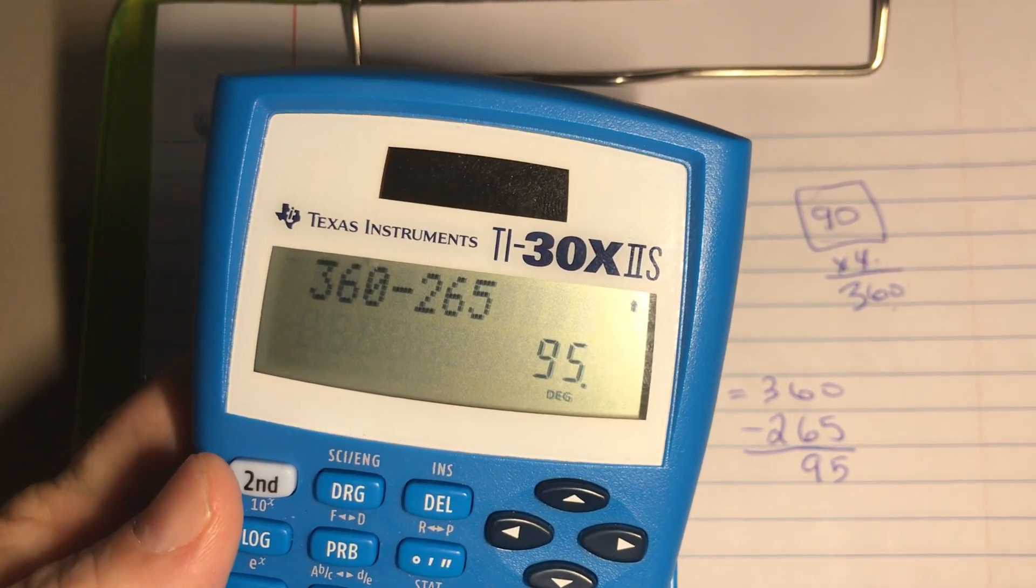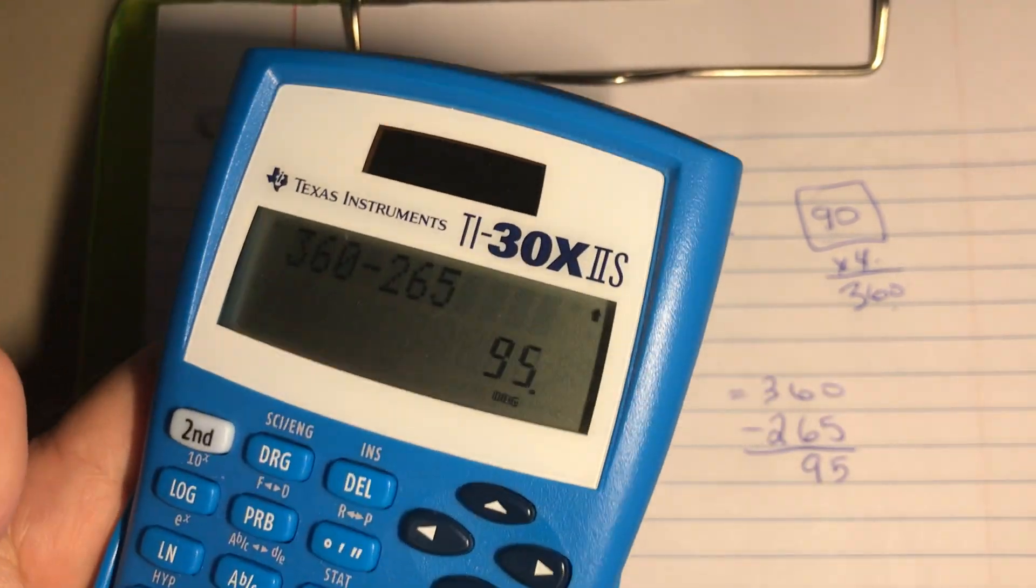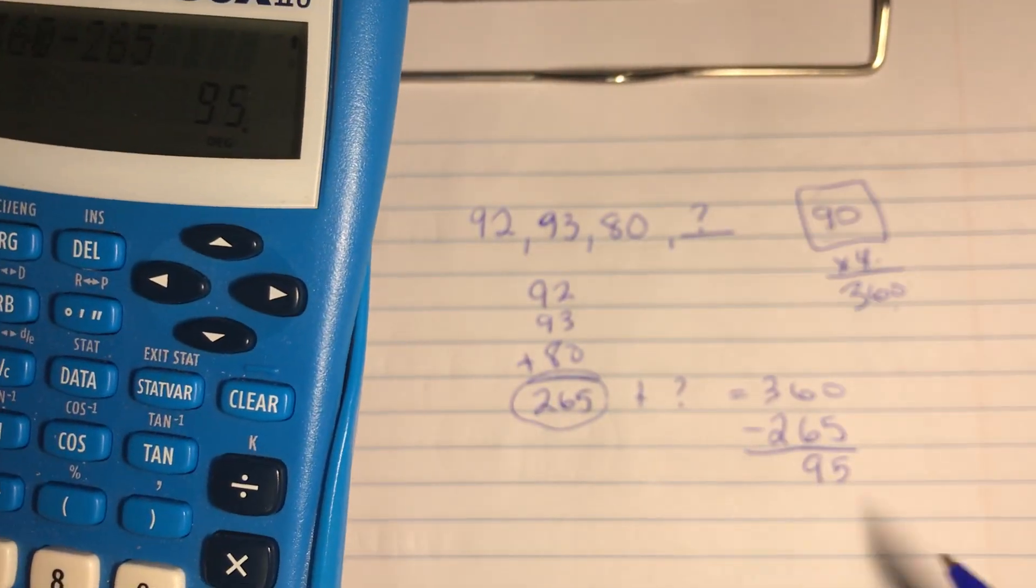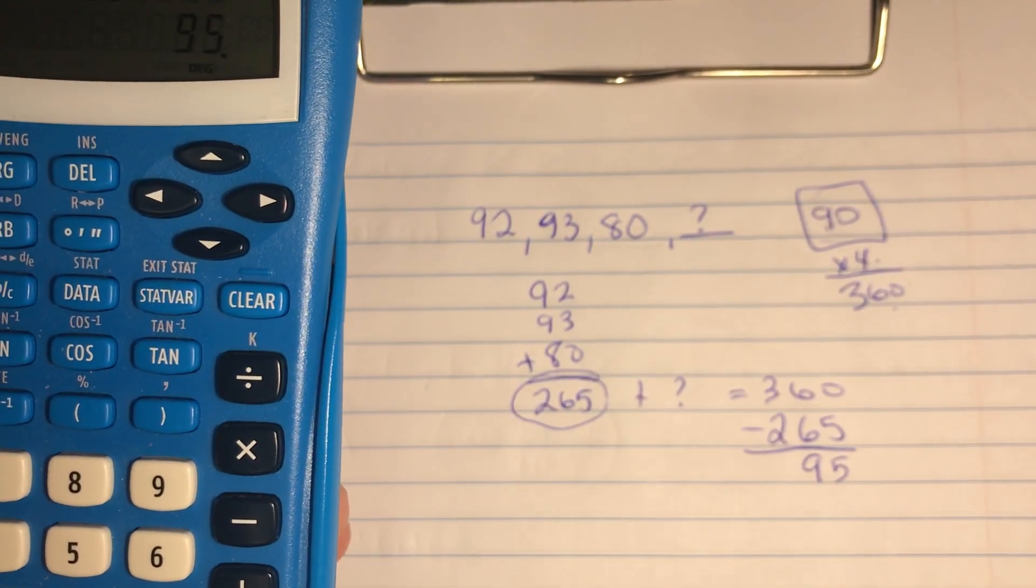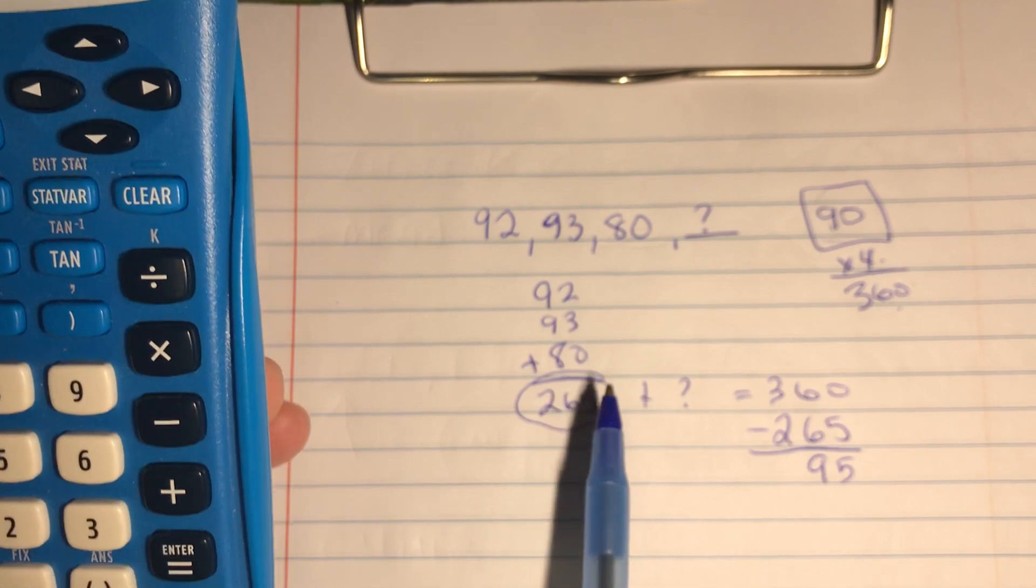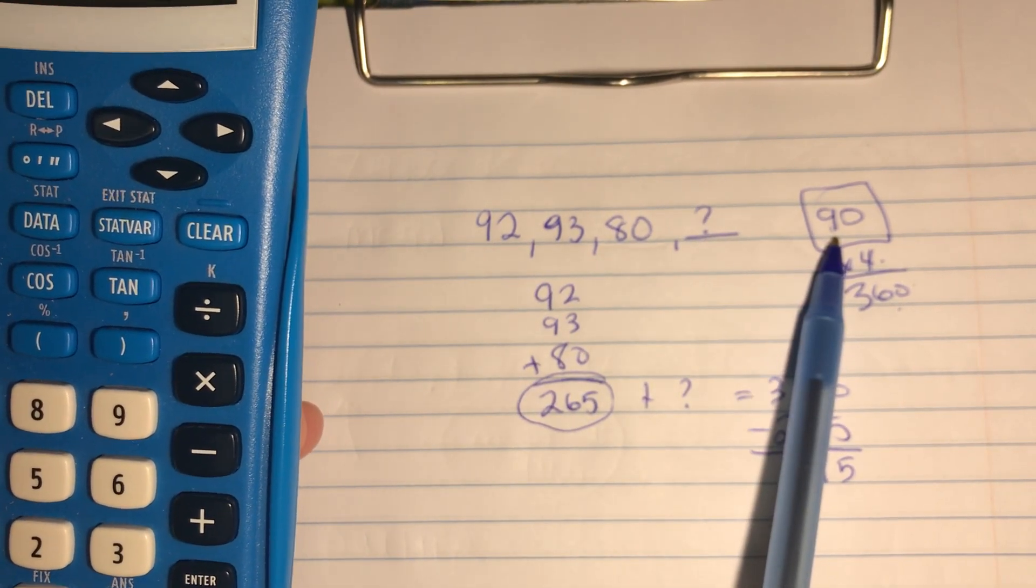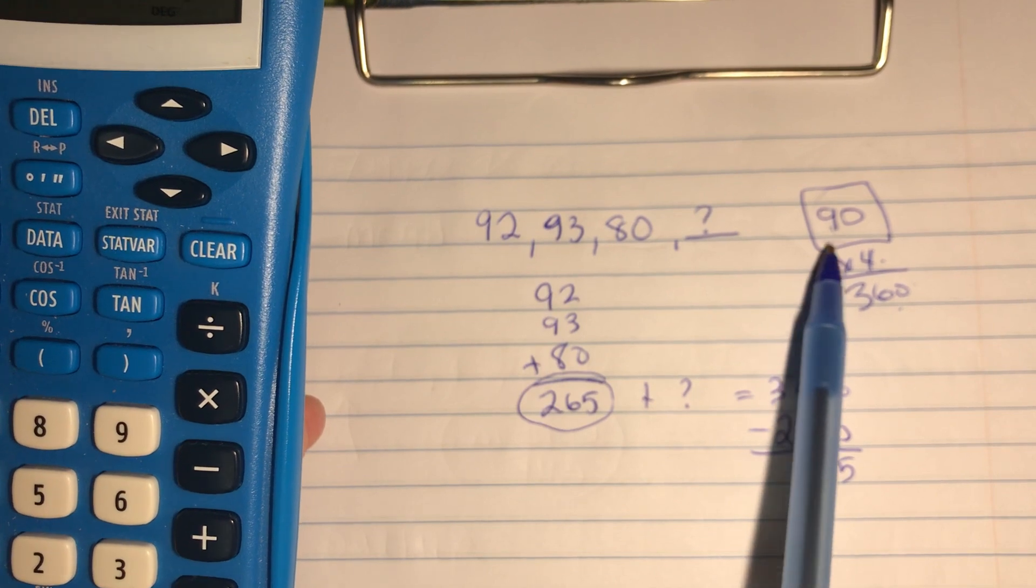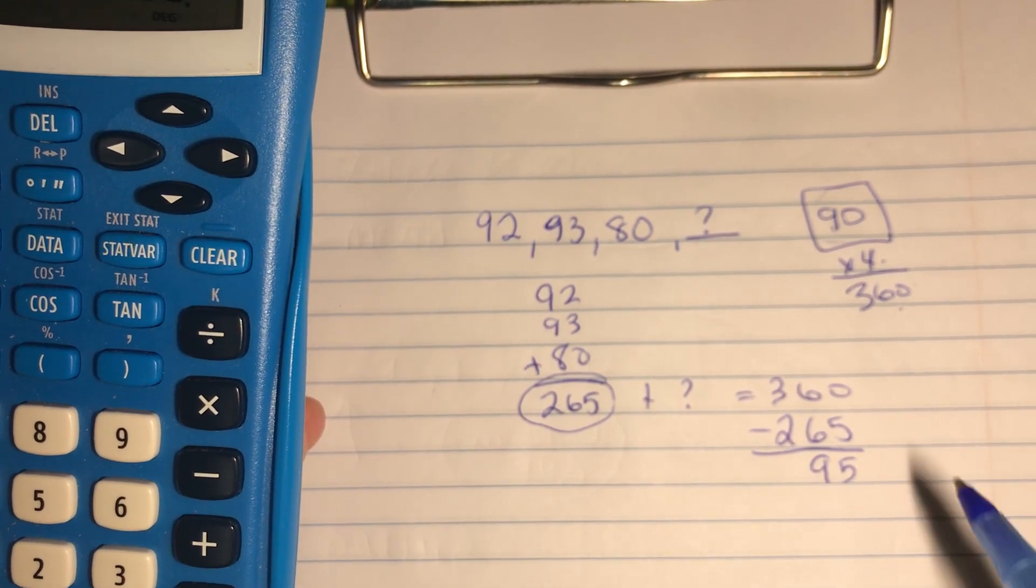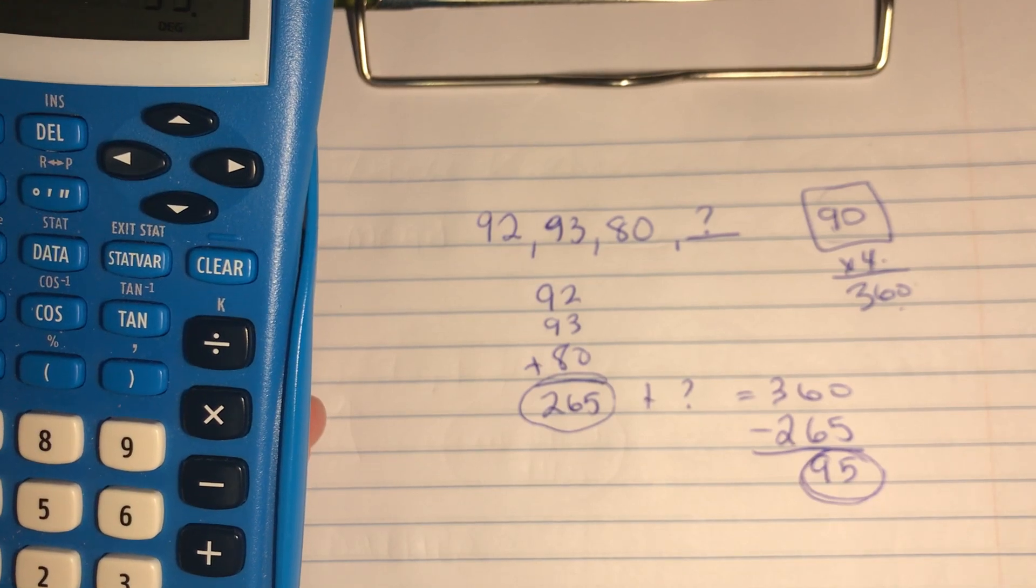Now there are other ways to do this as well. We can do this with more algebra—adding and dividing and multiplying with the equal sign and everything. But I'm showing you one of the ways that really makes sense to me. We have to know what that number is in order to get the average. But we already have the average we're trying to get—we want to get at least a 90. So that means I need to get at least a 95 on my next test in order to make an average of 90 or better.